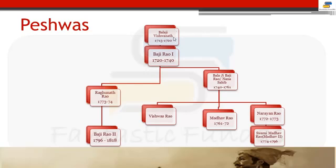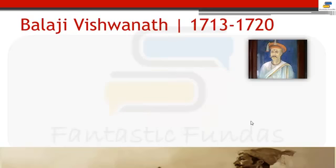The Peshwa succession starts with Balaji Vishwanath. His son was Bajirao I. Bajirao I had two sons: Balaji Bajirao — famously known as Nana Sahib — and Raghunath Rao. Nana Sahib had three sons: Vishwas Rao (eldest), Madhav Rao (second), and Narayan Rao (third). Raghunath Rao had one son, Bajirao II. Narayan Rao had one son named Sawai Madhav Rao.